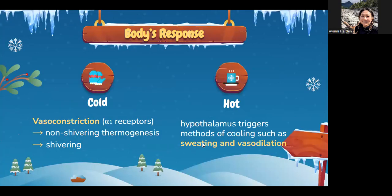When we are cold, the body causes vasoconstriction — alpha-1 receptors are activated — it causes non-shivering thermogenesis first, then shivering, and we create heat that way. When we are hot, we vasodilate and start sweating to reduce heat, and the hypothalamus triggers that cooling method.